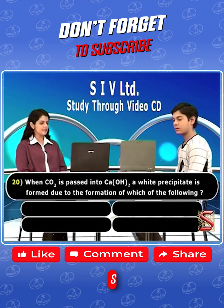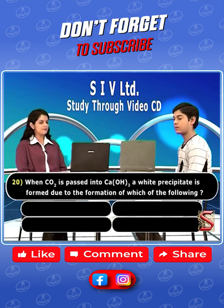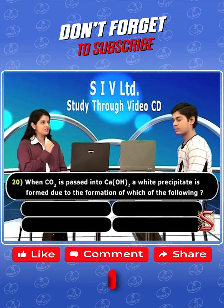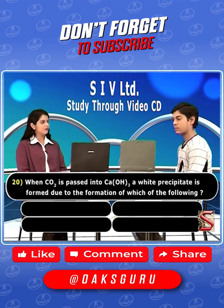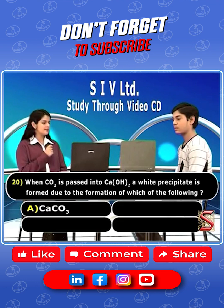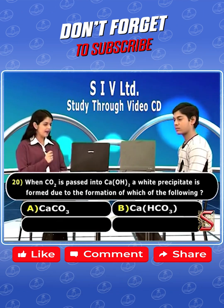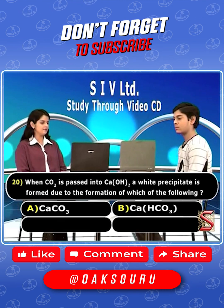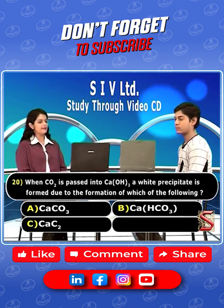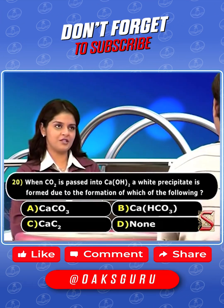When CO₂ is passed into Ca(OH)₂, a white precipitate is formed due to the formation of which of the following? Your options: A. CaCO₃, B. CaHCO₃, C. CaC₂, D. None. So what is your option now?